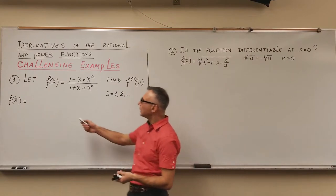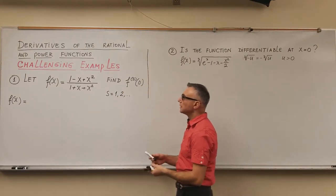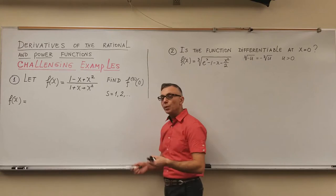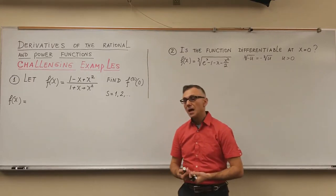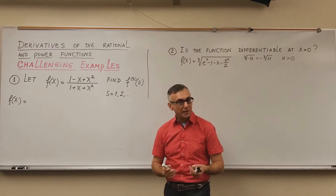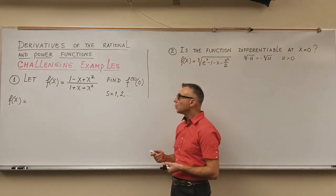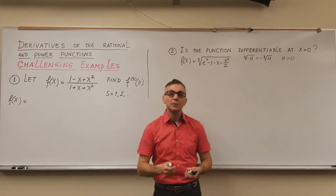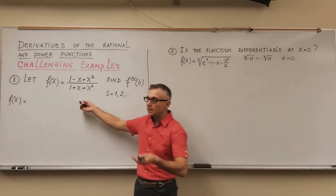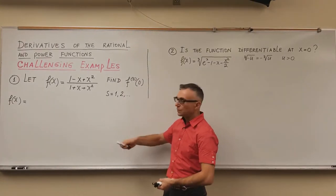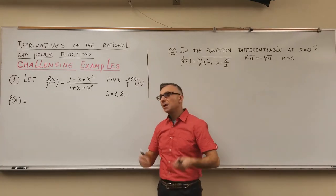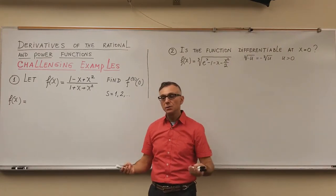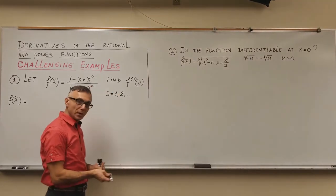Let's look at example one. Given the rational function with numerator polynomial one minus x plus x squared, and denominator one plus x plus x squared, we need to find the s-th derivative of that function at zero — that is, the derivative of this function of order s at input variable equal to zero. As you can see, the direct approach using the quotient rule would be catastrophic. With order two or three it becomes so messy we will not be able to find it. That's why I will try to use other tools and transformations.